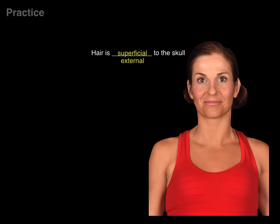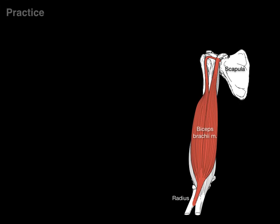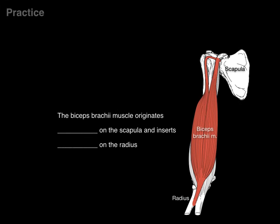Hair is blank to the skull. Hair is superficial to the skull, or hair is external to the skull — both are correct because the hair covers all different parts from the outside. And one more: the biceps brachii muscle originates blank on the scapula and inserts blank on the radius. You could say it originates proximally on the scapula and inserts distally on the radius, or originates superiorly on the scapula and inserts inferiorly on the radius.